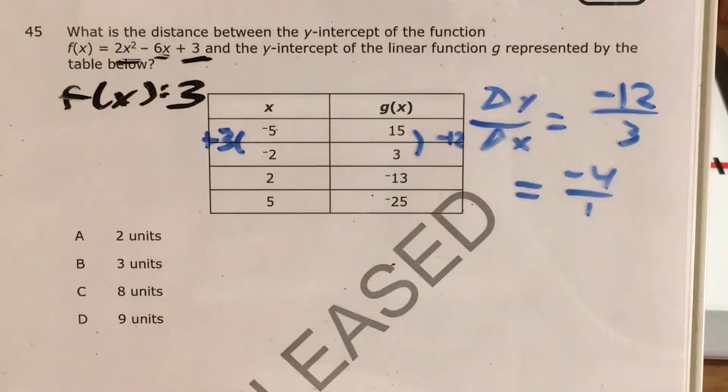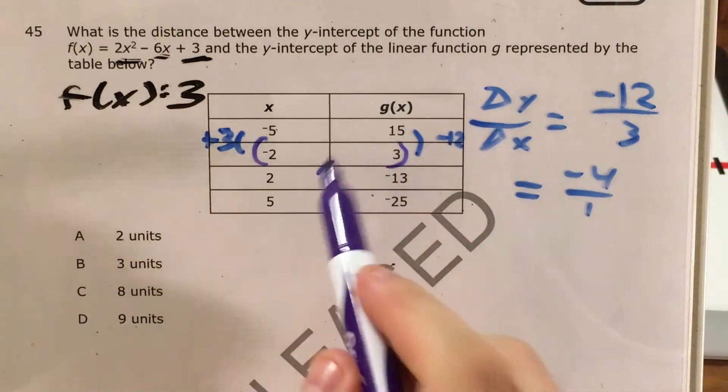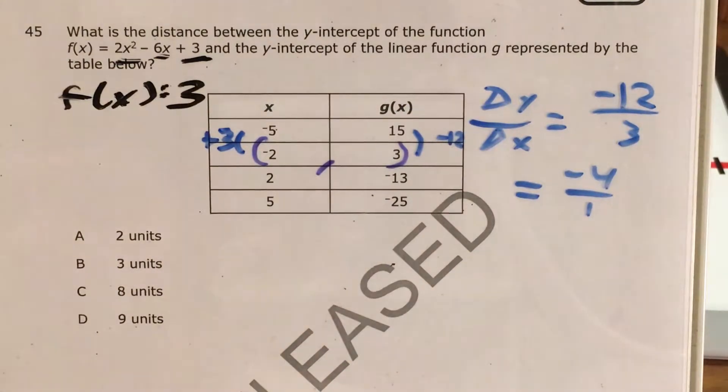Now that I have -4 as my slope, I'm ready to plug this into point-slope form. I have my slope, but I need a point. I'll pick the point with the easiest numbers to work with, which are usually the smallest numbers.